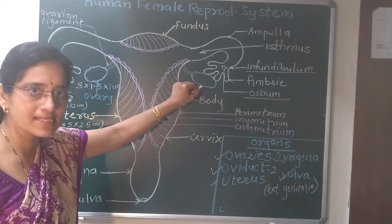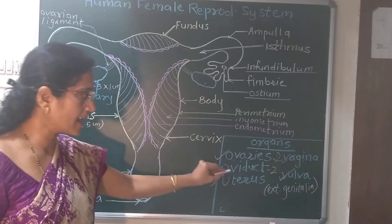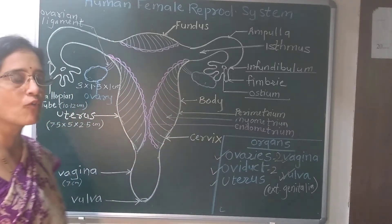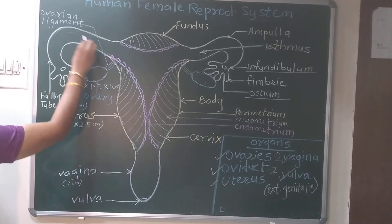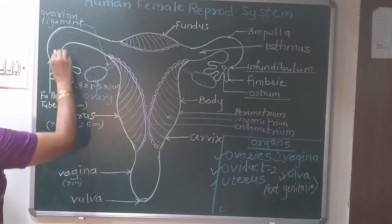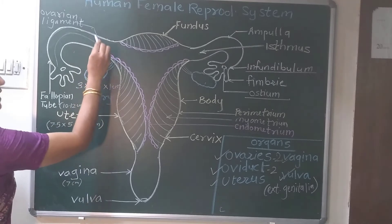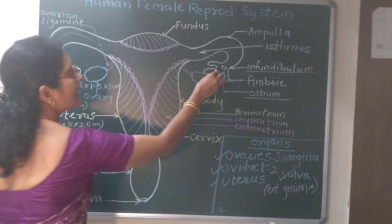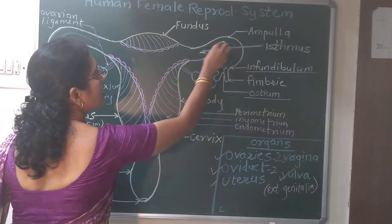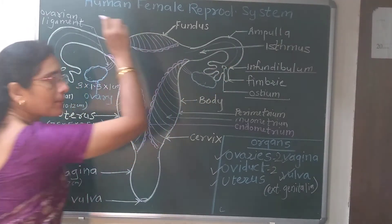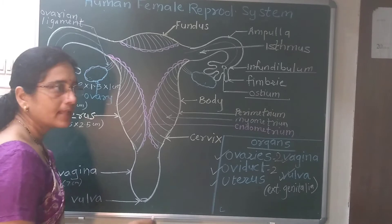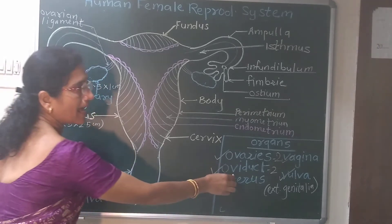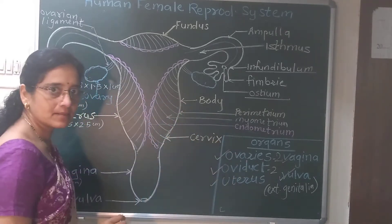The next organ is oviduct. Oviduct are these tubes — this one tube and this is another tube. They are called as oviduct.